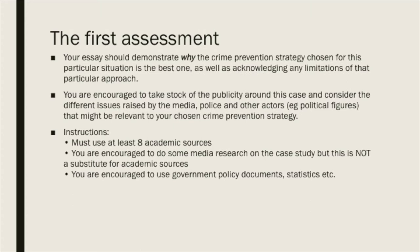What you need to achieve in your writing is demonstrate why the crime prevention strategy you have chosen is the best one and acknowledge any limitations of that particular approach. For example, if you were to go with social prevention, you'd need to explain why it could help or would be a relevant prevention strategy for this particular incident. Give a few reasons based on the strengths and assumptions of the approach, and don't forget to mention the limitations as well.